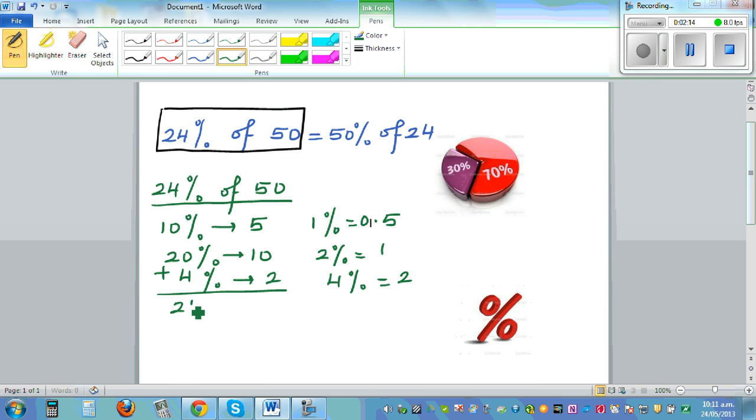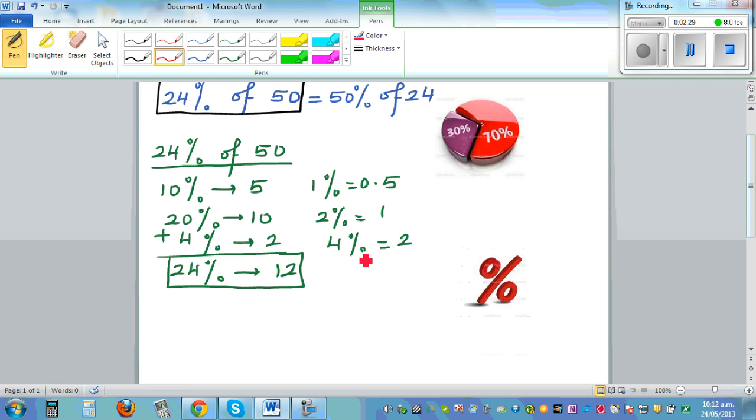So I'll write now, 4% of 50 is 2. So you can add these two, so well, you can say 24% of 50 is 12. That is easy. But now let's check it out whether... so let me scroll this up slightly.